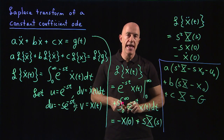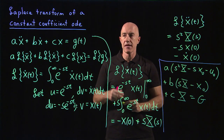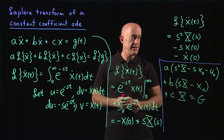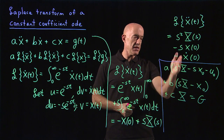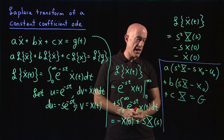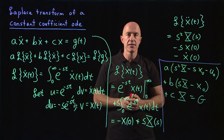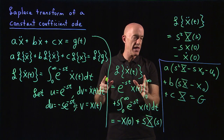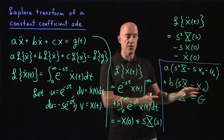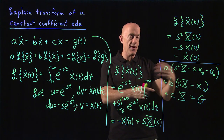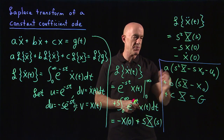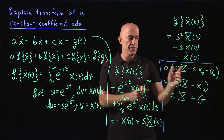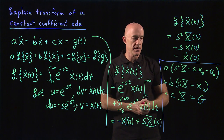This is the equation in s-space after taking the Laplace transform of the differential equation in t-space. It's a linear equation in capital X, so you can easily solve it: isolate the capital X term on the left, move everything else to the right, then divide through by the coefficient of capital X and solve for capital X of s. Very simple, because this is a linear equation.